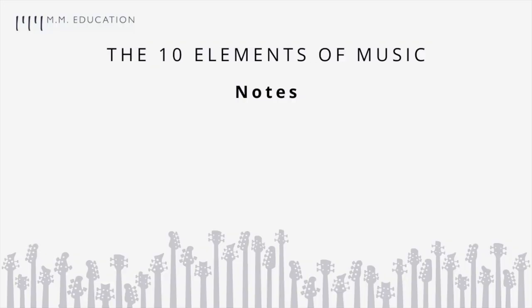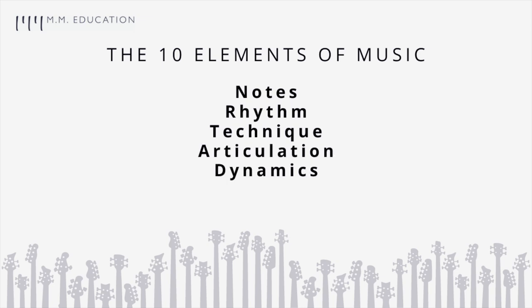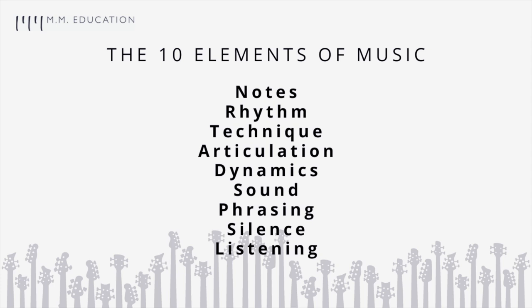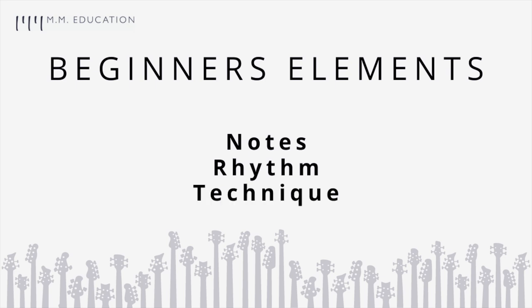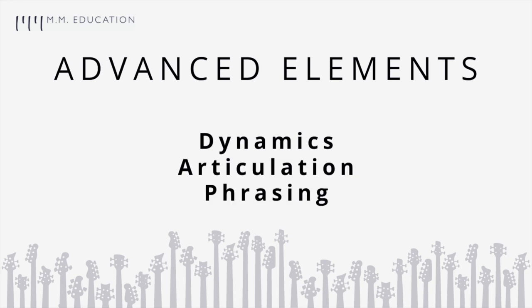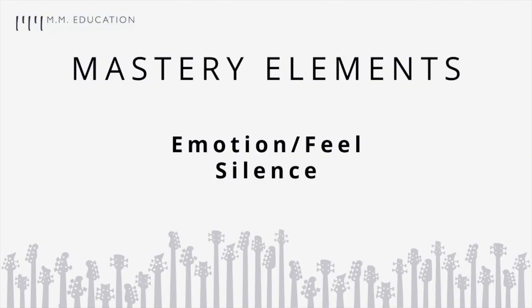Notes, Rhythm, Technique, Articulation, Dynamics, Sound, Phrasing, Silence, Listening and Emotion. To simplify this concept a little bit, I grouped the elements into three categories: the beginner elements — Notes, Rhythm and Technique; the advanced elements — Dynamics, Articulation, Phrasing and Sound; and the mastery elements — Emotion, Silence and Listening.